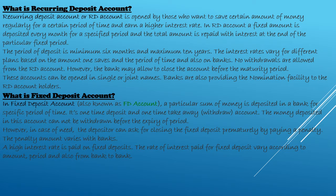In some fixed deposits, you cannot withdraw the money in between. But some banks now offer a sweep-in deposit facility — you keep money for a particular time and earn fixed deposit interest, which is higher than recurring deposit and savings deposit rates. With sweep-in, you can also withdraw money when required. However, you will get the fixed deposit rate of interest only for the period you kept the money without withdrawing it — once you withdraw, the interest rate reduces.